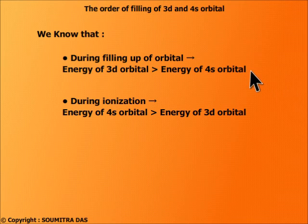Here we say that 3d orbital has higher energy and while ionization we say that 4s orbital has higher energy. Now both the arguments cannot be true at the same time.